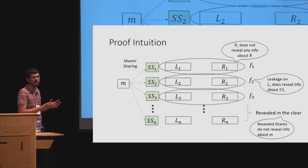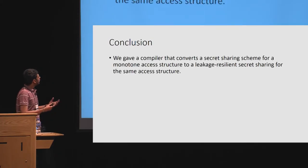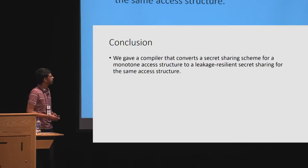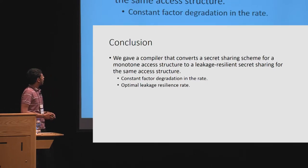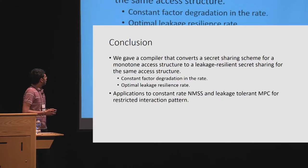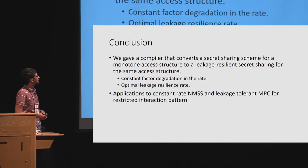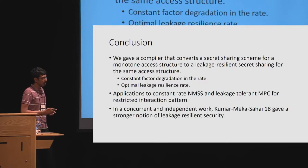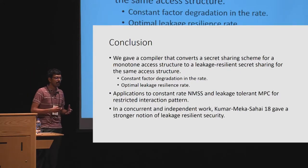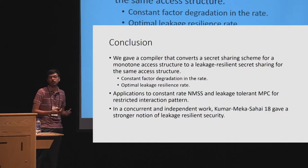Of course, there are many subtleties involved — I encourage you to look at the paper for exact details. To conclude, the main result is a compiler converting a secret sharing scheme for a monotone access structure A into a leakage-resilient scheme for the same access structure, with constant factor degradation in rate and optimal leakage resilience rate. We also give applications to constant-rate non-malleable secret sharing in the information-theoretic setting, and to leakage-tolerant MPC for restricted interaction patterns. In a concurrent and independent work, Kumar, Meka, and Sahai gave a stronger notion of leakage resilience and interesting constructions based on connections to communication complexity.